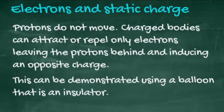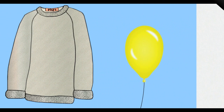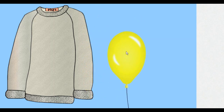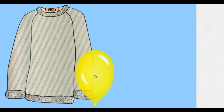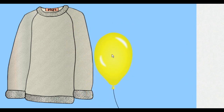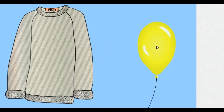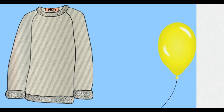This can be demonstrated using a balloon that is an insulator. In this diagram, on the left is a sweater, in the middle an insulator, and on the right-hand side a wall. Rubbing the insulator against the sweater drags electrons from the sweater onto the balloon. Moving the balloon towards the wall induces an opposite charge, and the opposite charges then attract.